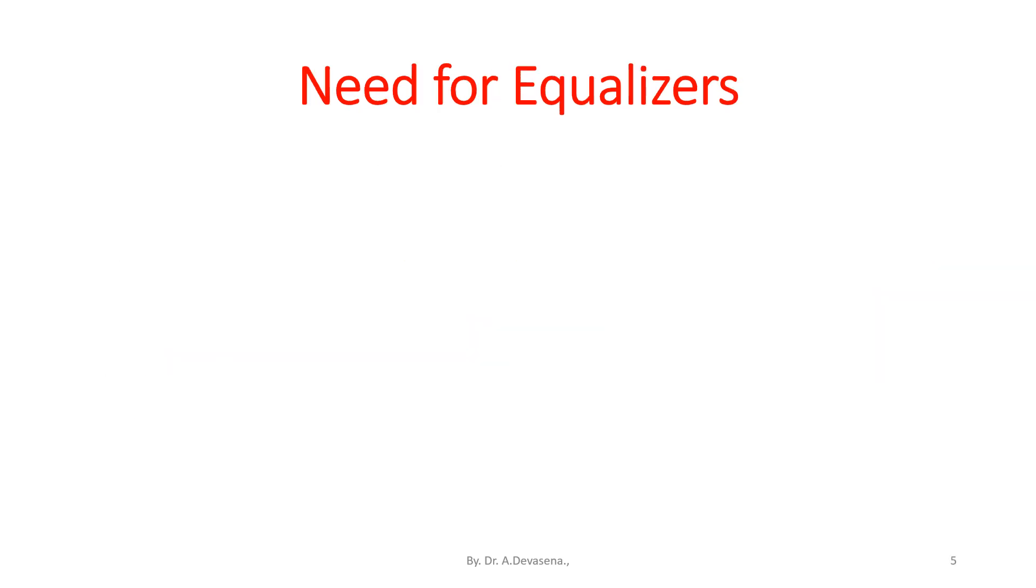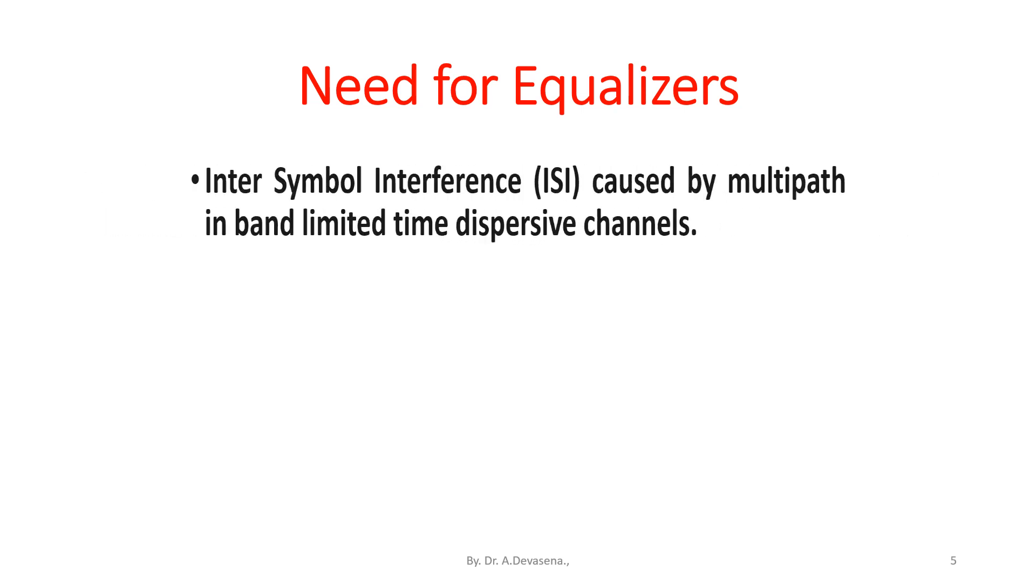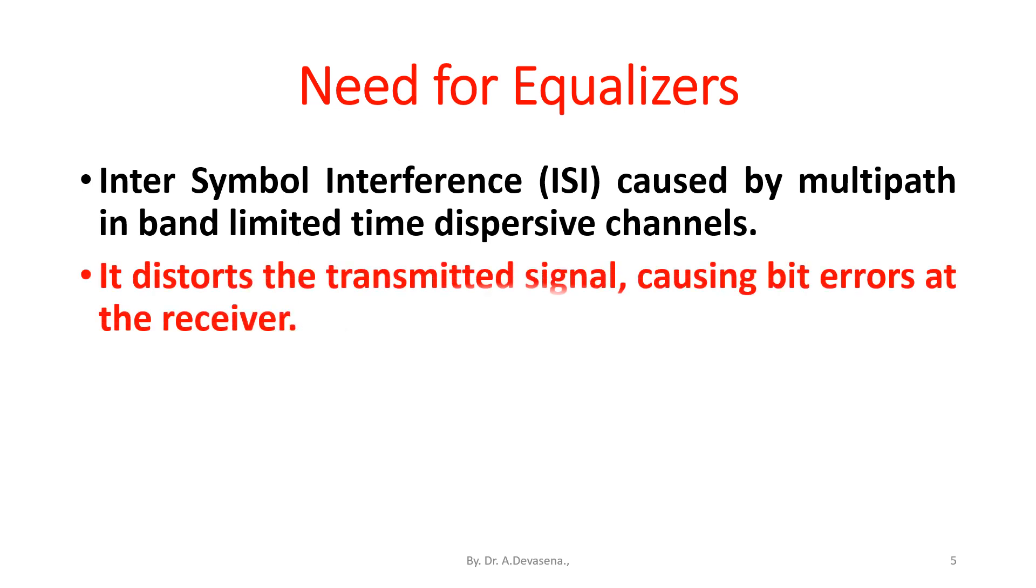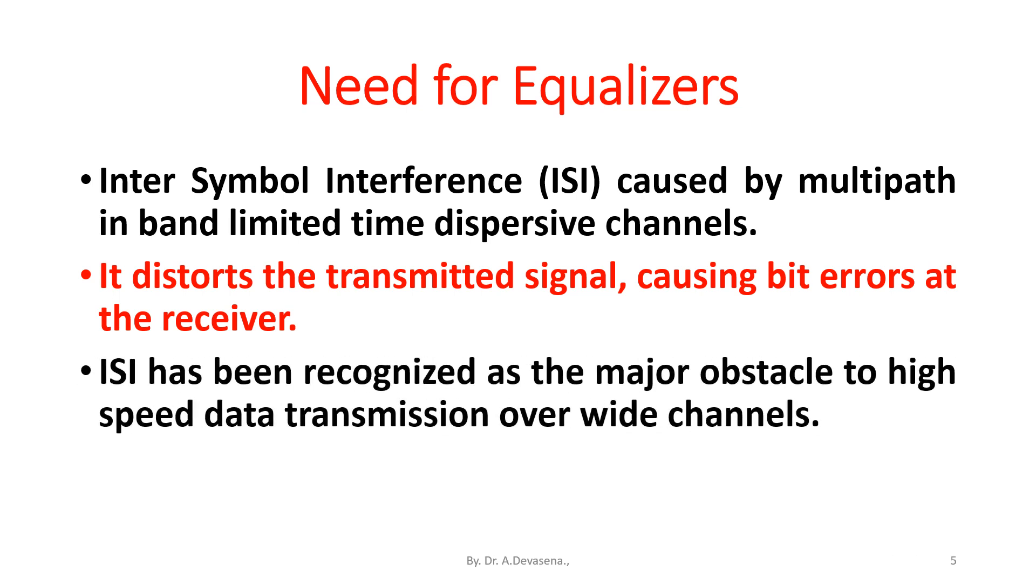Need for equalizers: Inter-symbol interference, i.e. ISI, caused by multipath in band-limited time dispersive channels. It distorts the transmitted signal, causing bit errors at the receiver. For example, ISI has been recognized as the major obstacle to high-speed data transmission over wide channels.